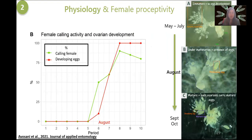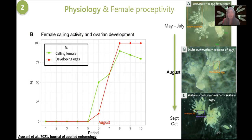Prior to August, none of the females called, replied to the playback, or carried developing eggs inside their abdomen. However, starting from August, females began to develop their eggs, and they started to call and reply to the playback. This trend increased throughout the season, reaching a peak in September–October, where all females were receptive to mating and also carrying mature eggs inside their abdomen.